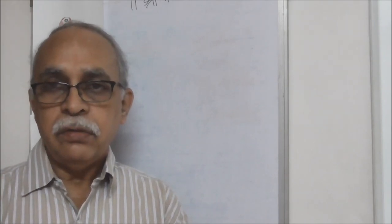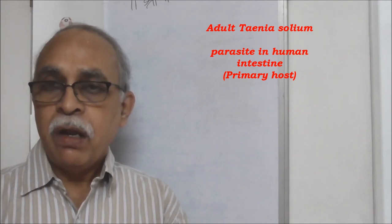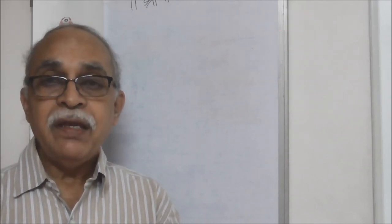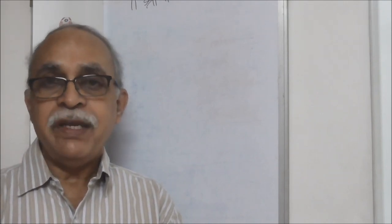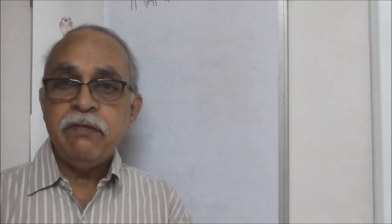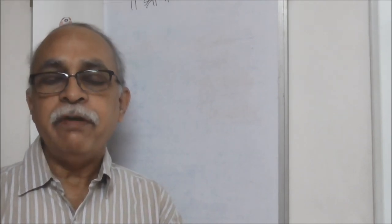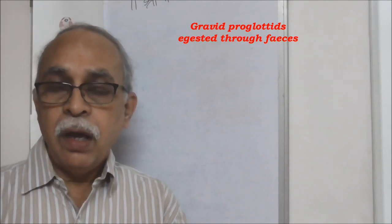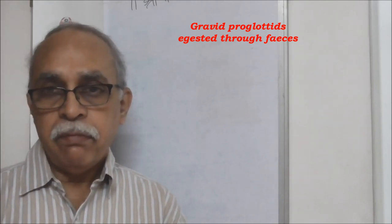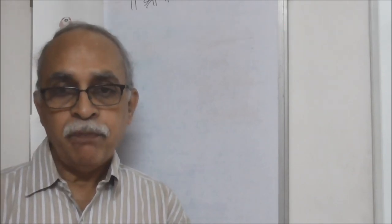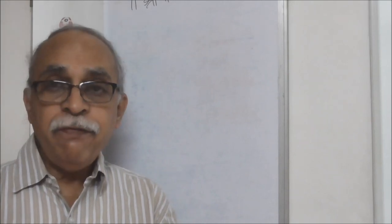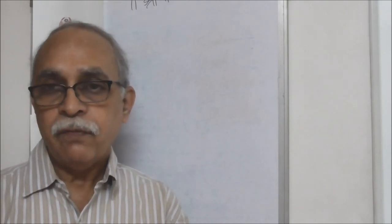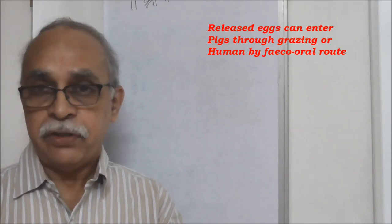The adult Taenia solium is an intestinal parasite found in human beings. Human being is its definitive host, in which the adult stays attached to the intestinal wall. After the gravid proglottids are formed, they are ejected through feces, and thereafter they may rupture to release the eggs.